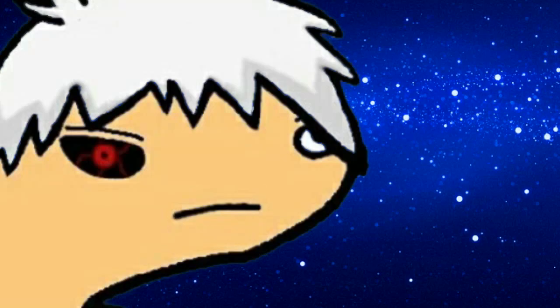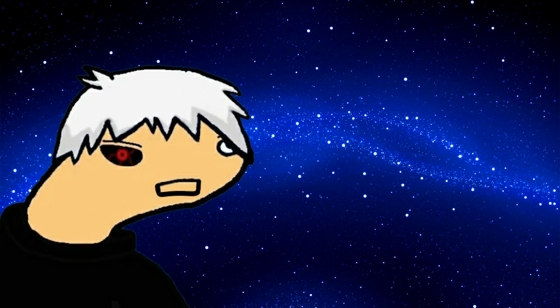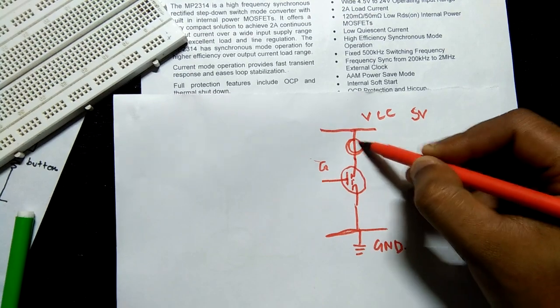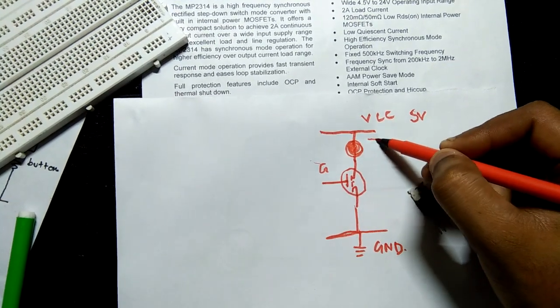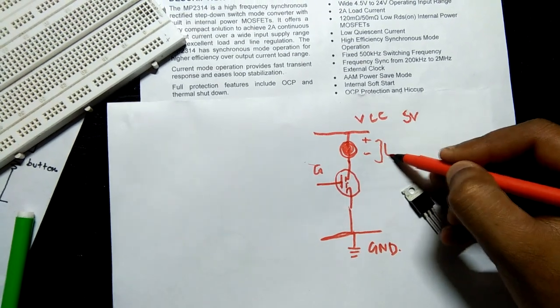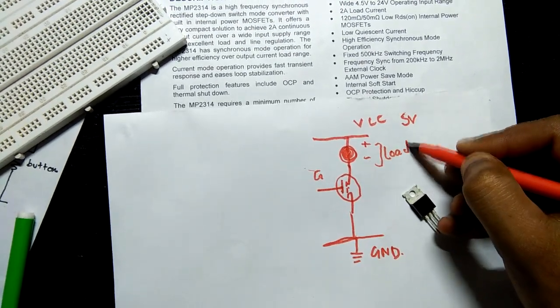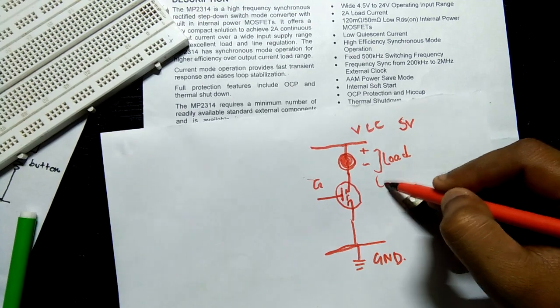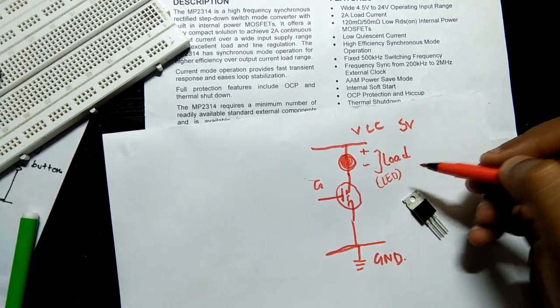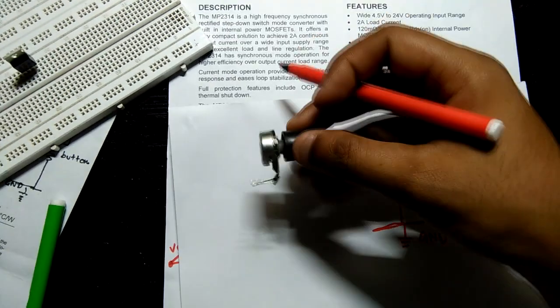Here's our MOSFET. Our load is connected in series with VCC to drain of MOSFET. Positive terminal of load is connected to VCC and ground of load is connected to drain of our MOSFET. Load can be a high power LED or array of LEDs or even a DC motor.